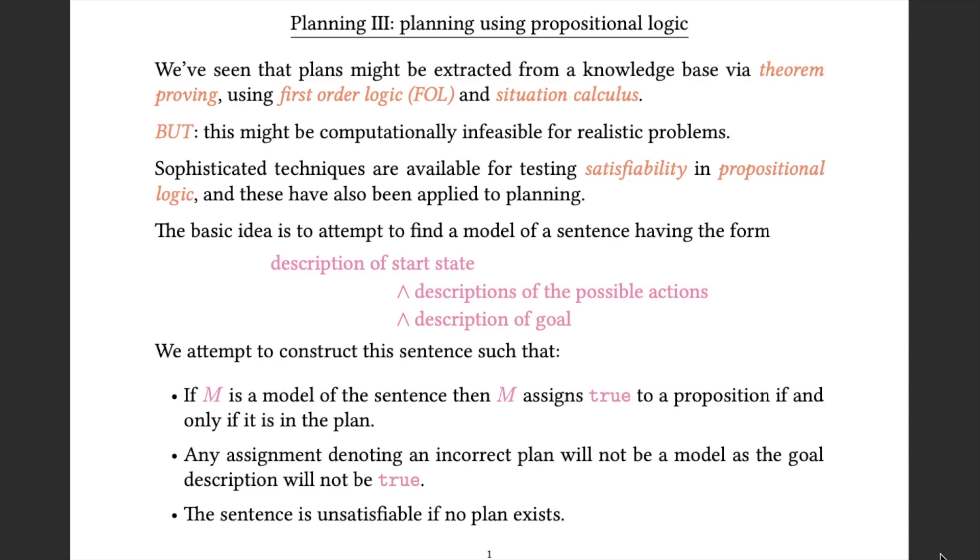The idea here is we want to take a planning problem and translate it into a sentence in propositional logic. We're going to construct the sentence in a specific way so that it includes a description of the start state of our planning problem, the descriptions of the actions that we might take in our plan and a description of the goal and these are joined together with conjunctions. We want to do it specifically so that if we can find a satisfying assignment or a model, then M the model assigns true to a proposition if and only if it's in the plan.